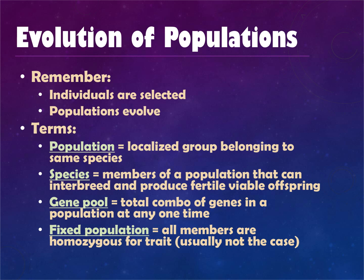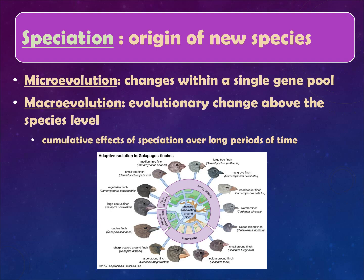Don't forget evolution occurs among a population, not an individual. Populations themselves evolve over time. A population is a group of the same species living in the same area. Species are members that can interbreed and produce viable offspring. A gene pool is all the combination of genes that exist at any time — all the traits available. A fixed population is one where members are homozygous for a trait with very little variation, which isn't super common. Speciation is the process of creating a new species — usually a series of microevolutions indicating changes in a single gene pool that lead to macroevolutions.